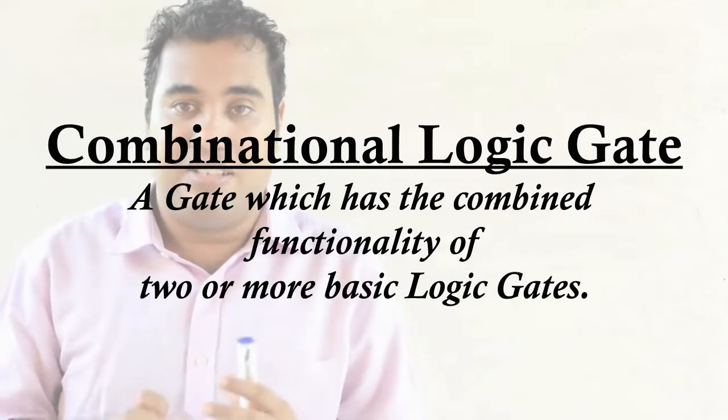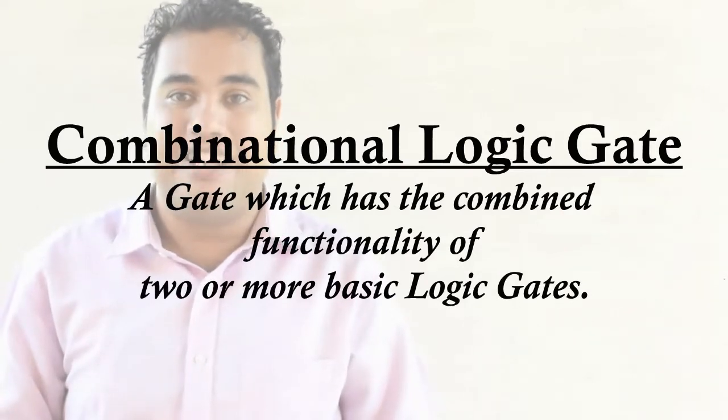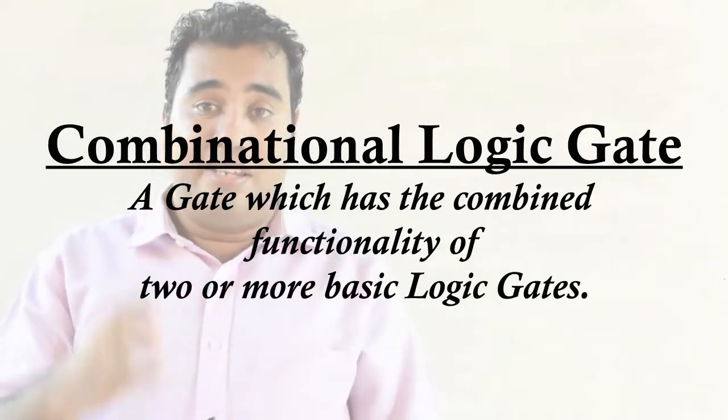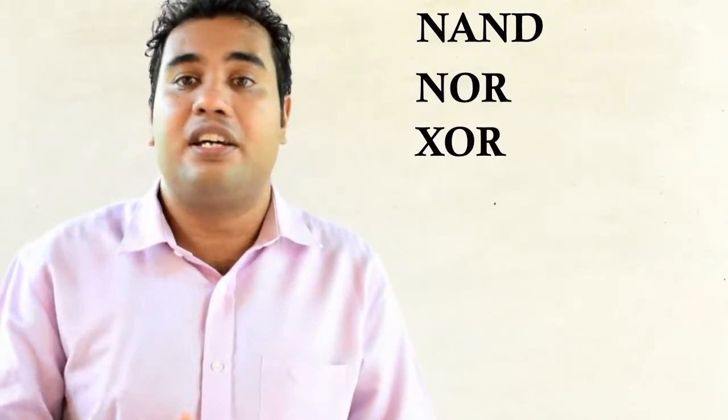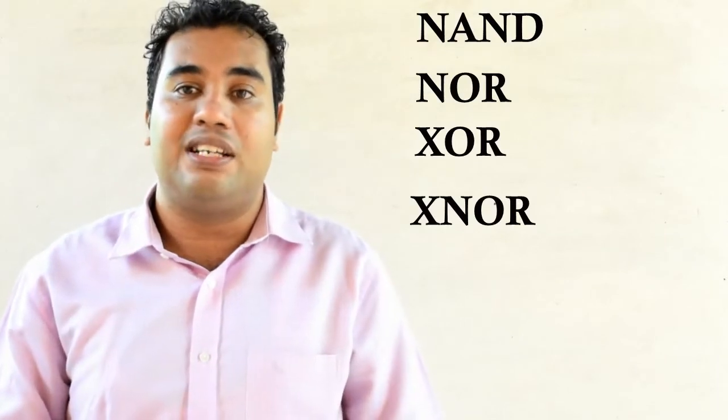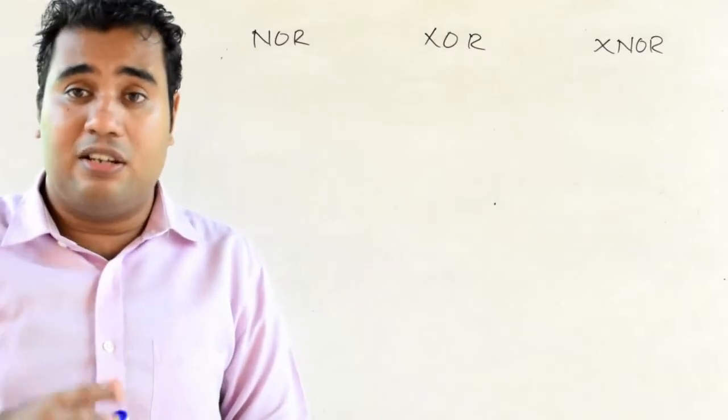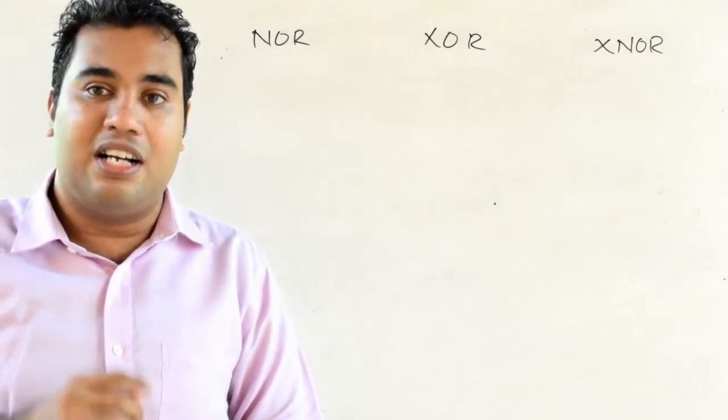As the name itself states, a combinational logic gate is a combination of two or more basic logic gates. There are four combinational logic gates we are going to discuss: NAND, NOR, XOR, and XNOR. Those are the four combinational logic gates that we are going to use in our circuits.